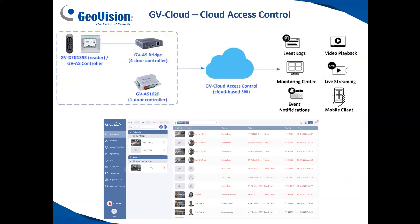Cloud access control is another feature available with the GV Cloud solution. It supports the GeoVision AS1620 one-door controller, the GV-AS2120 two-door controller, and the GV-AS4111 kit. It currently does not support the eight-door controller. With the GV-AS1620, you can plug it directly into your network with the latest firmware and go straight up to the cloud, allowing you to manage everything through the cloud website without any on-site PC running the GeoVision AS manager software.